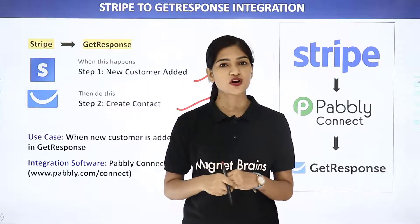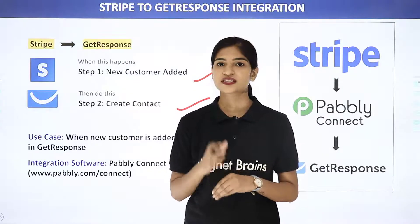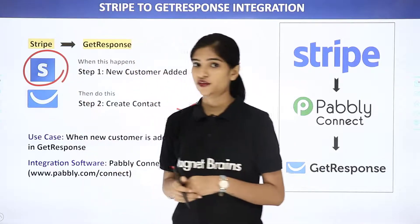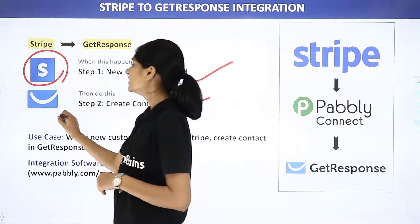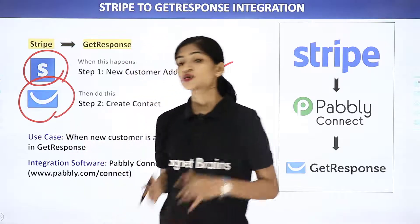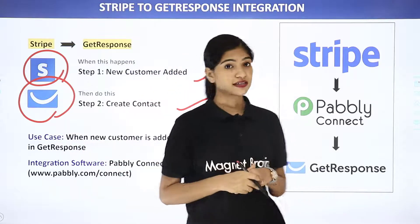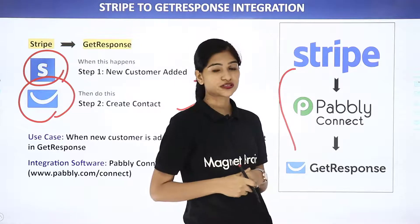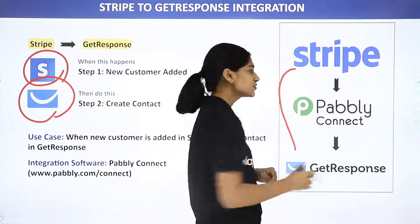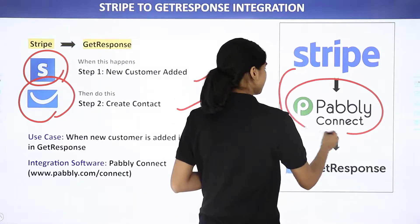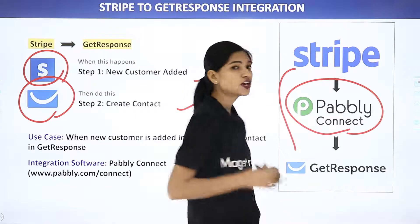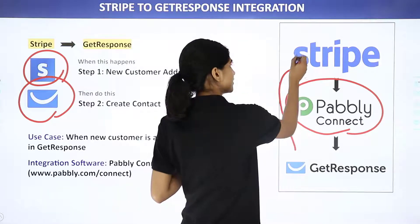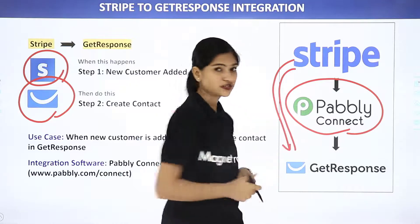First, let us know what these two software applications are all about. Stripe is an online payment processing software, whereas GetResponse is an email marketing software. The issue here is that we don't have any integration between Stripe and GetResponse. That is where we are going to use Pabbly Connect, a third party application software to integrate them. Pabbly Connect is going to help us to send data from Stripe to GetResponse.